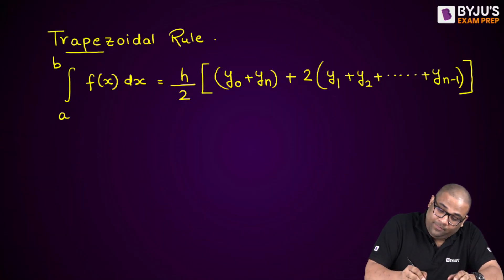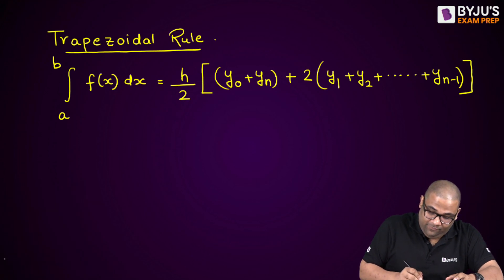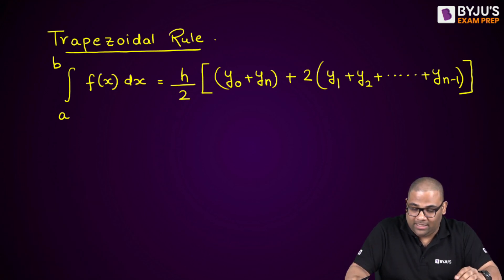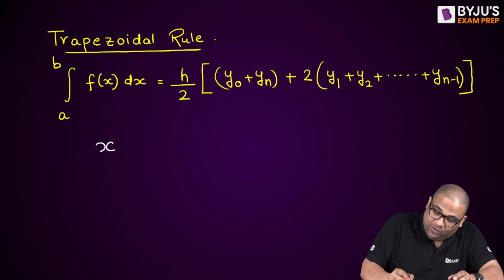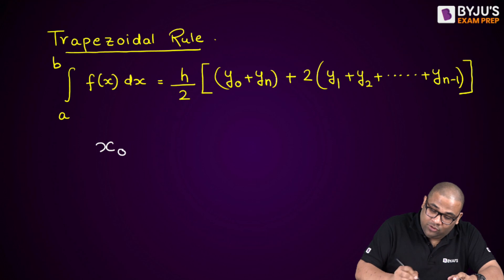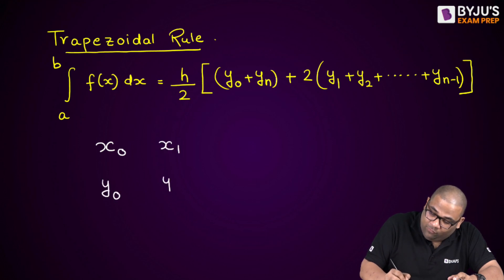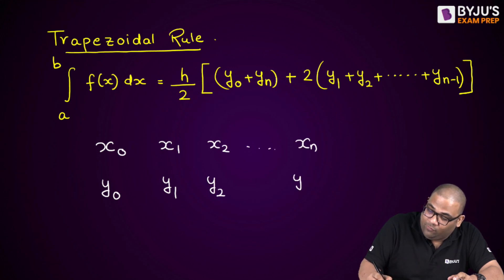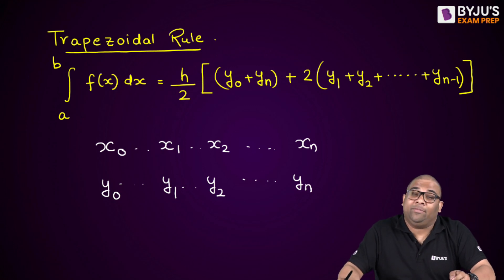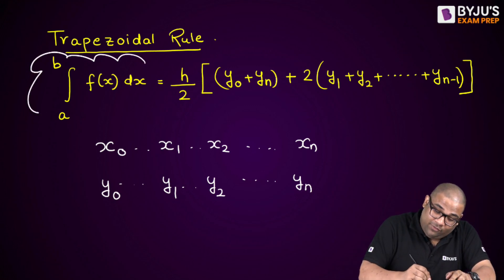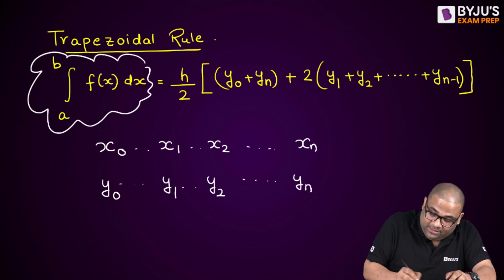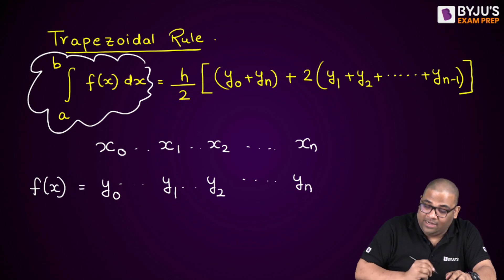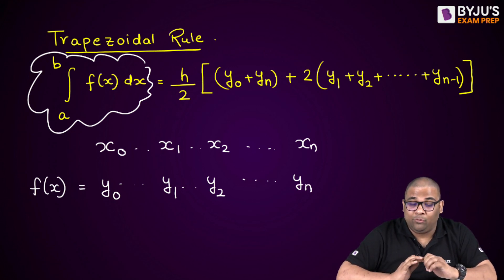In the trapezoidal rule, when we are integrating from a to b, for different values of x we get different values of y. So for x₀ we get y₀, for x₁ we get y₁, for x₂ we get y₂, and so on up to xₙ giving yₙ. This table of data will be given to you in the examination. Now if I want to find out the integration of this function — y is f(x) — between limits a and b, I use the trapezoidal rule formula. Here h is the interval.